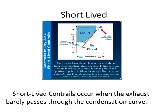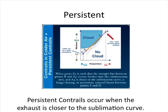Short-lived contrail formation: The exhaust from the airplane mixes with the air from the atmosphere along a straight line between points B and A. A contrail forms at point F and persists to point D. When the straight line between points A and B barely crosses into the condensation curve, a short-lived contrail is formed.